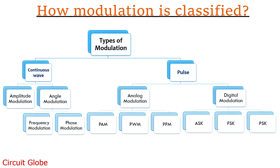On a general basis, modulation is classified as continuous wave modulation and pulse wave modulation. Continuous wave modulation is further classified as amplitude modulation and angle modulation. Angle modulation is again classified into two categories: frequency modulation and phase modulation. In continuous wave modulation, both the carrier wave and the message signal are in the form of analog signals.